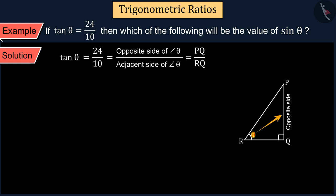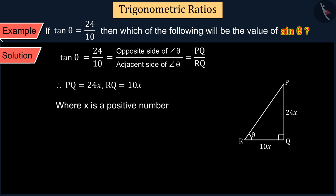In this triangle PQR, PQ is the opposite side and RQ is the adjacent side of the angle, which we can also write as PQ = 24x and RQ = 10x, where x is a positive number. Can we now find the value of sin θ? Absolutely not.